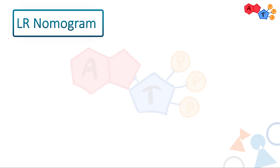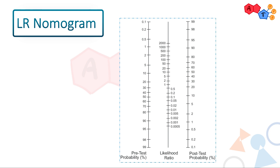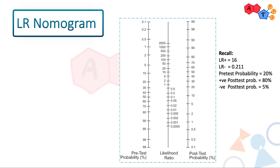To give you the full picture, let's look at a diagram called the nomogram. This eliminates any need for odds calculations — you just plot your points based on pretest probability and positive and negative likelihood ratios, then connect the pretest probability to each likelihood ratio using lines, and you'll get the exact post-test probability. In our example: positive likelihood ratio of 16, negative likelihood ratio of 0.211, and pretest probability of 20% give us post-test probabilities of 80% and 5% respectively.